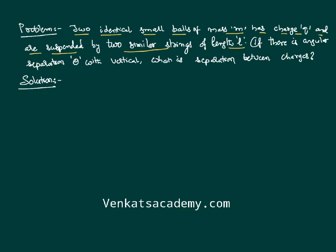First, why do they get separated? When you have these two charges — identical and similar in nature — between them there will be a repulsion force. That's why they get separated from each other. So this is mass m having a charge q.